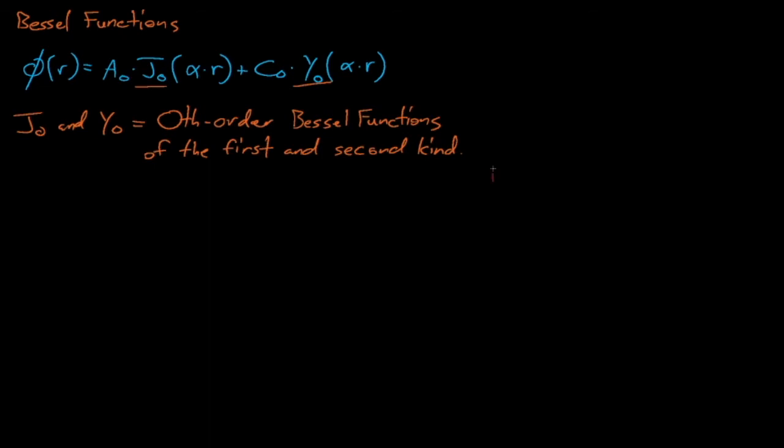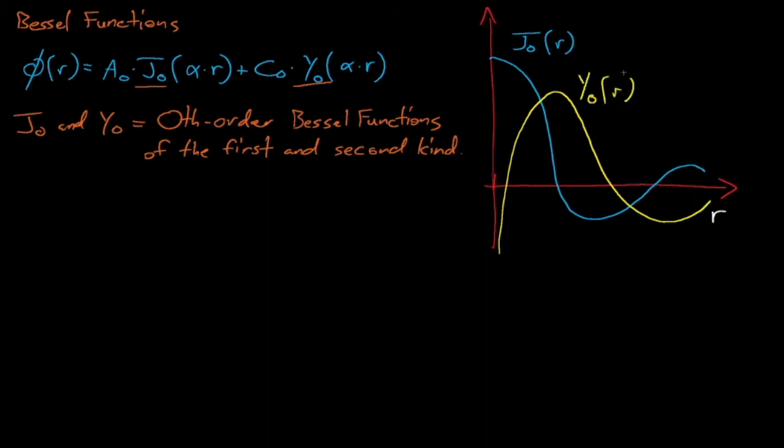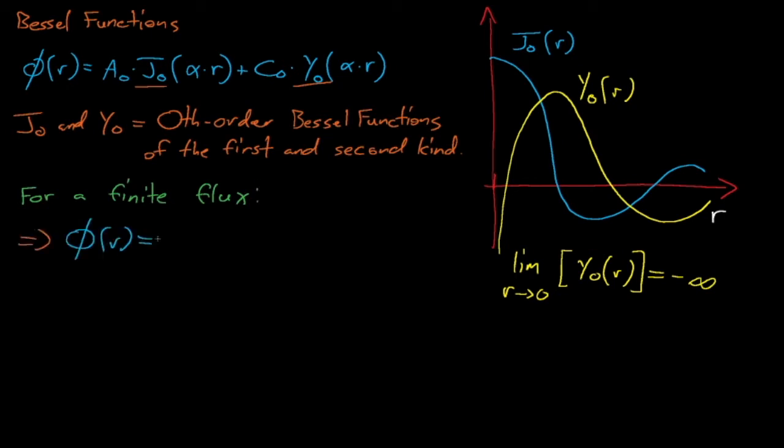If we plot the Bessel functions, we see that the J0 Bessel function reaches a maximum value at r equals 0, and then oscillates around an asymptote at y equals 0. The Y0 Bessel function approaches negative infinity when r equals 0, which means that C0 must equal 0 if we are to have a finite positive flux for our system at r equals 0. Thus, our flux is only described by the J0 Bessel function.